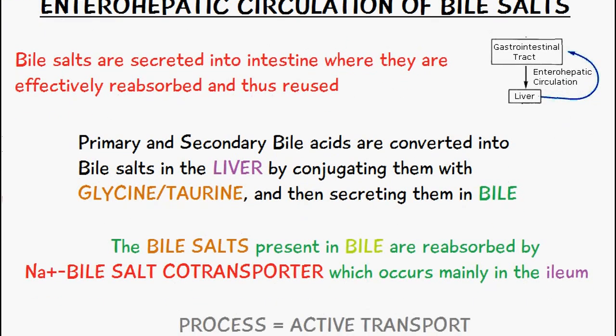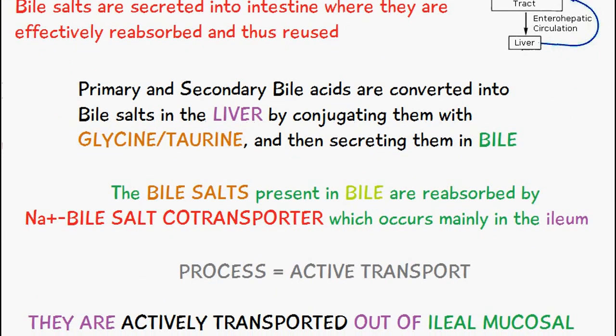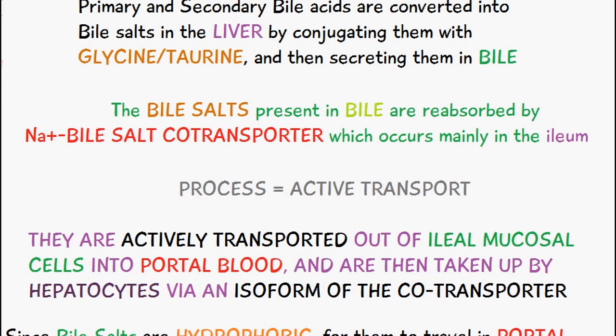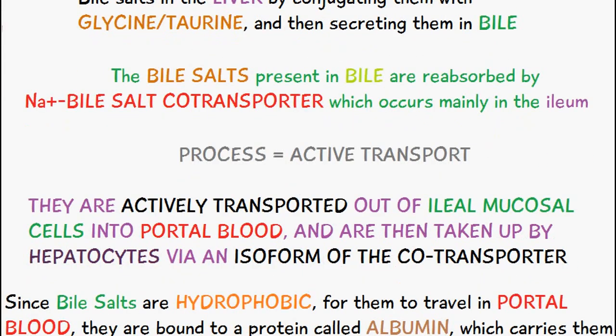The bile salts present in bile are reabsorbed by the sodium bile salt co-transporter, which occurs mainly in the ileum, and this process is done by active transport. They are actively transported out of the ileal mucosal cells into the portal blood, and then taken up by hepatocytes via an isoform of this co-transporter.